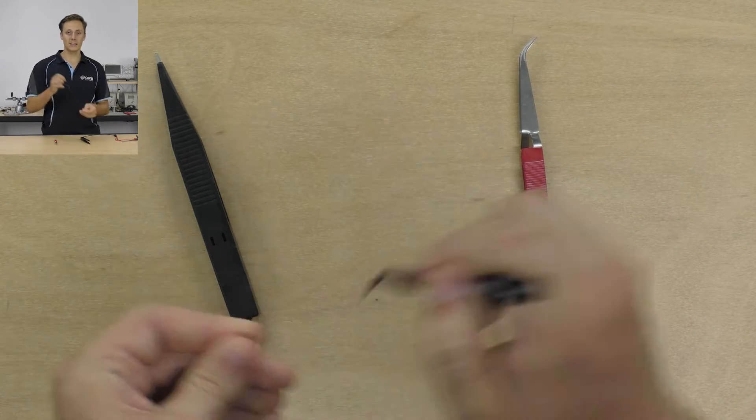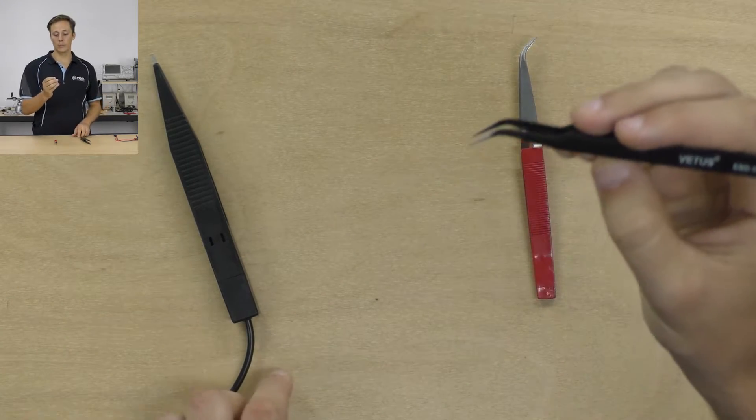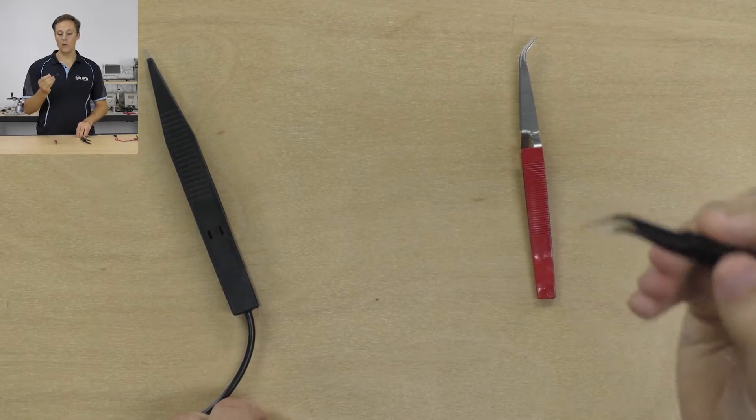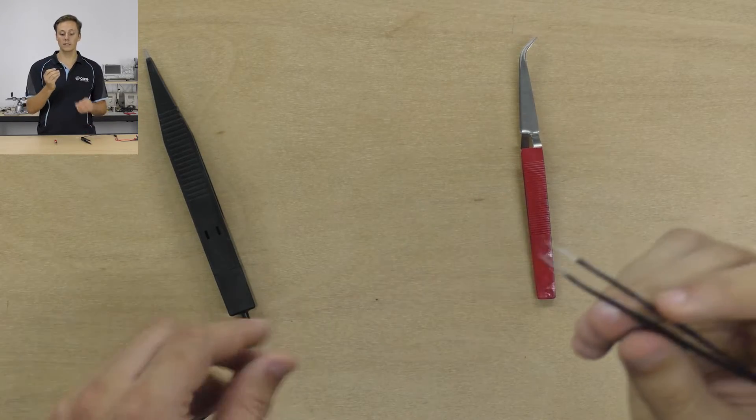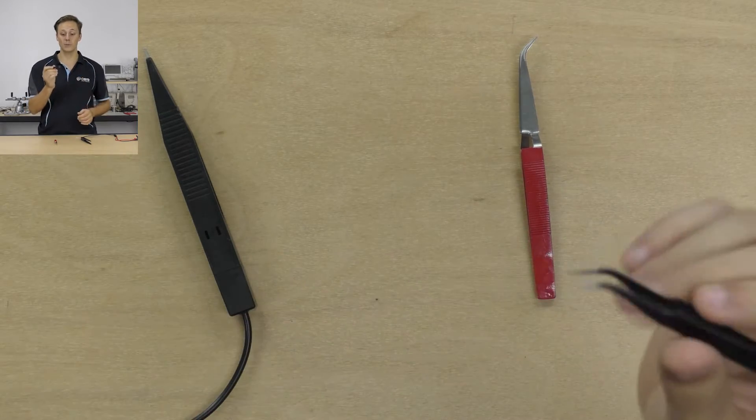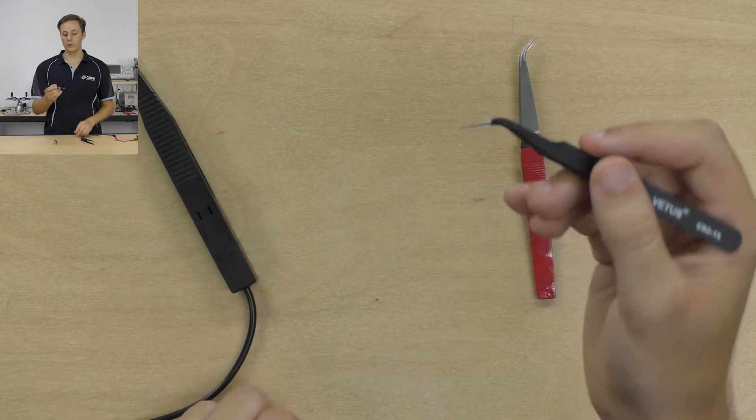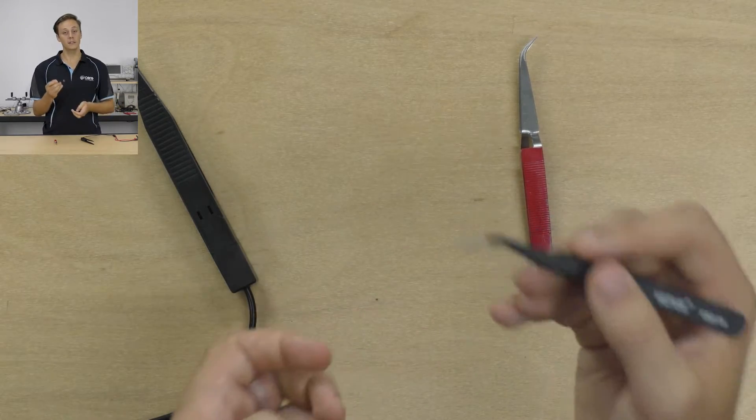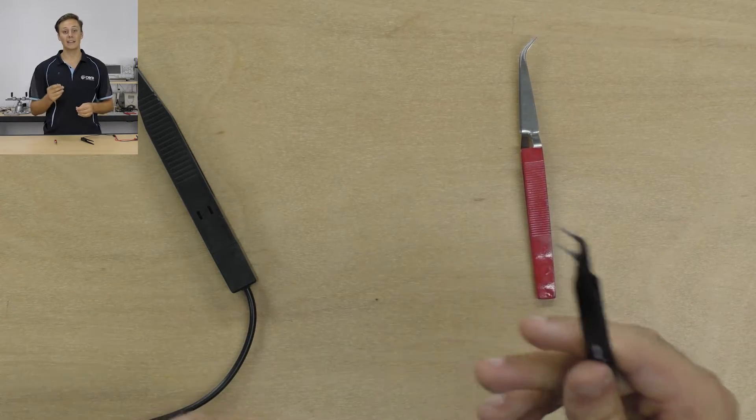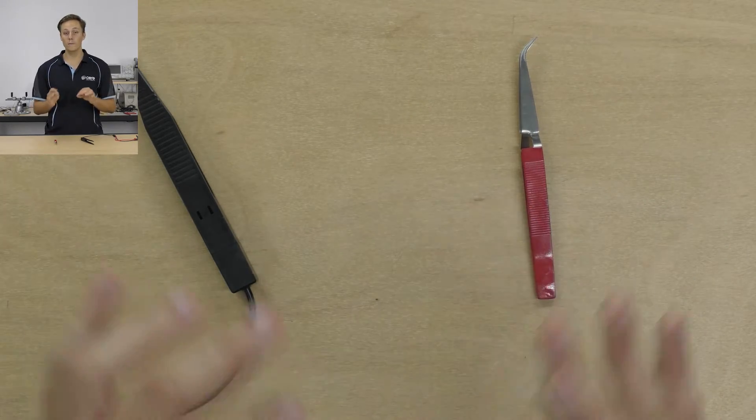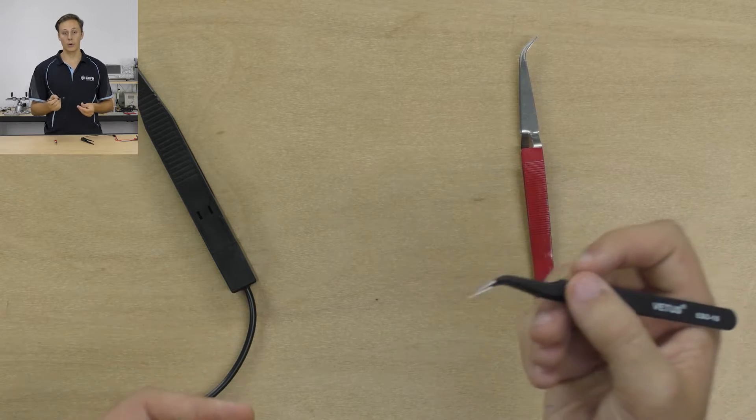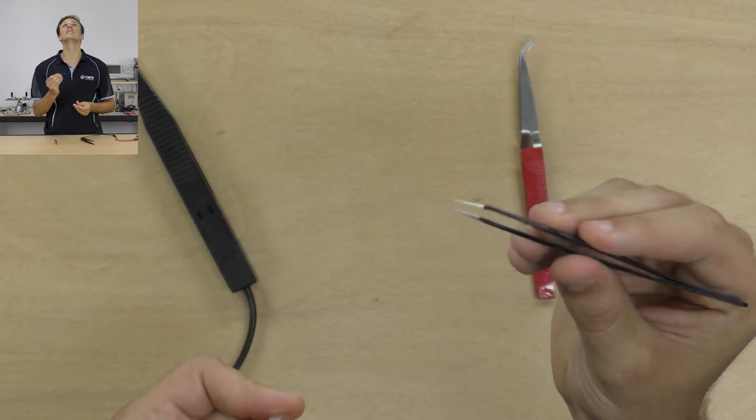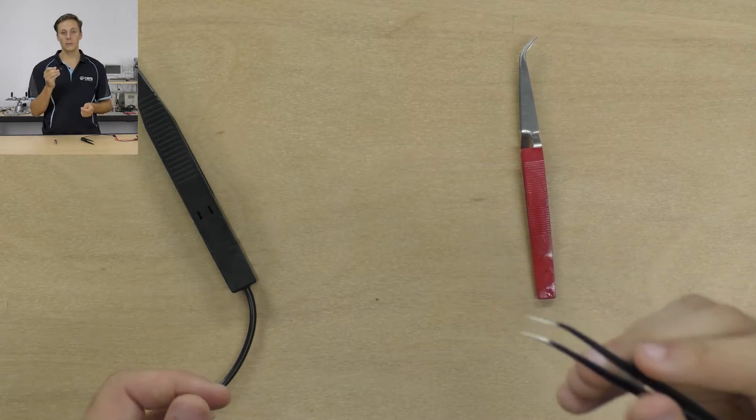So first up, we've got these, and these are from Adafruit. They're from a brand called Vetus, and they're awesome. They're extremely fine-tipped tweezers. In fact, so fine, they're quite sharp, so be careful when working with them. But they've got a nice matte black finish with some stainless steel tips that are hardened, so they're not going to bend. And they're anti-magnetic along with anti-static, so perfect for working with sensitive and delicate electronic components. As you can see, quite nice and fine tip for picking up really, really tiny parts.